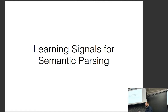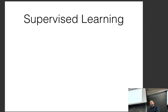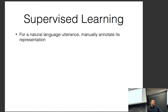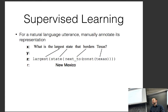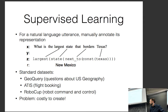On learning signals for semantic parsing: when doing this task going to an executable meaning representation, the easiest approach is to manually annotate a representation for each natural language utterance and treat that as ground truth. An example is the GeoQuery dataset: 'what is the largest state that borders Texas' is annotated with a meaning representation Z. Standard datasets include GeoQuery, ATIS for flight booking, RoboCup, etc. The problem is these annotations are very costly to create.